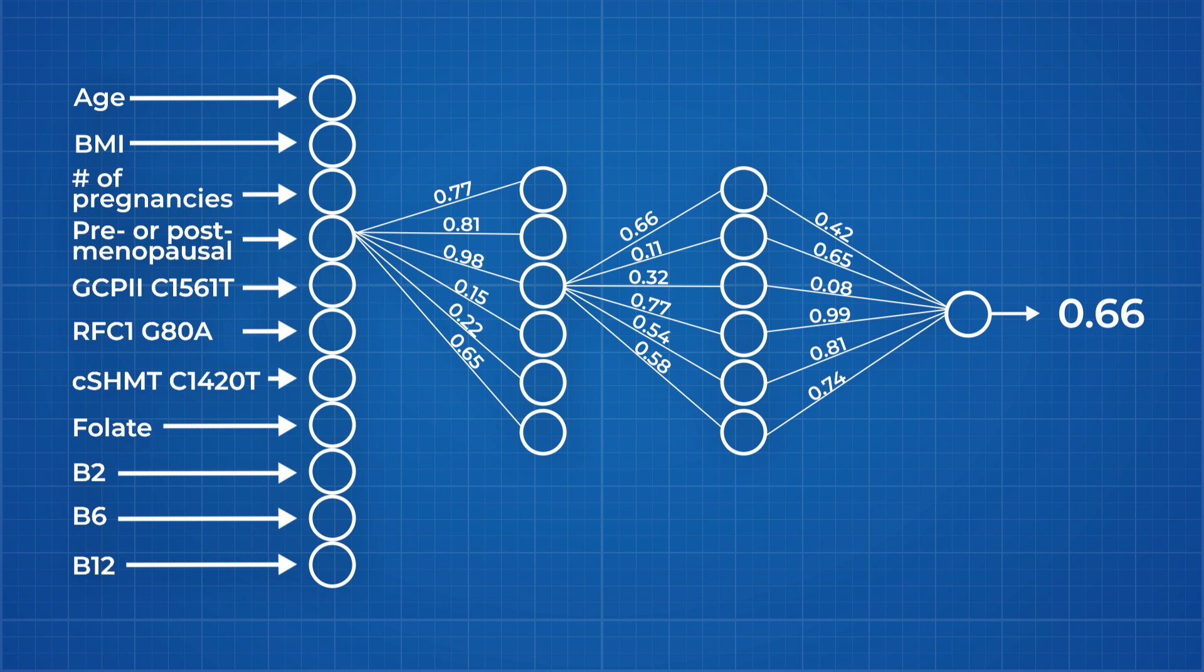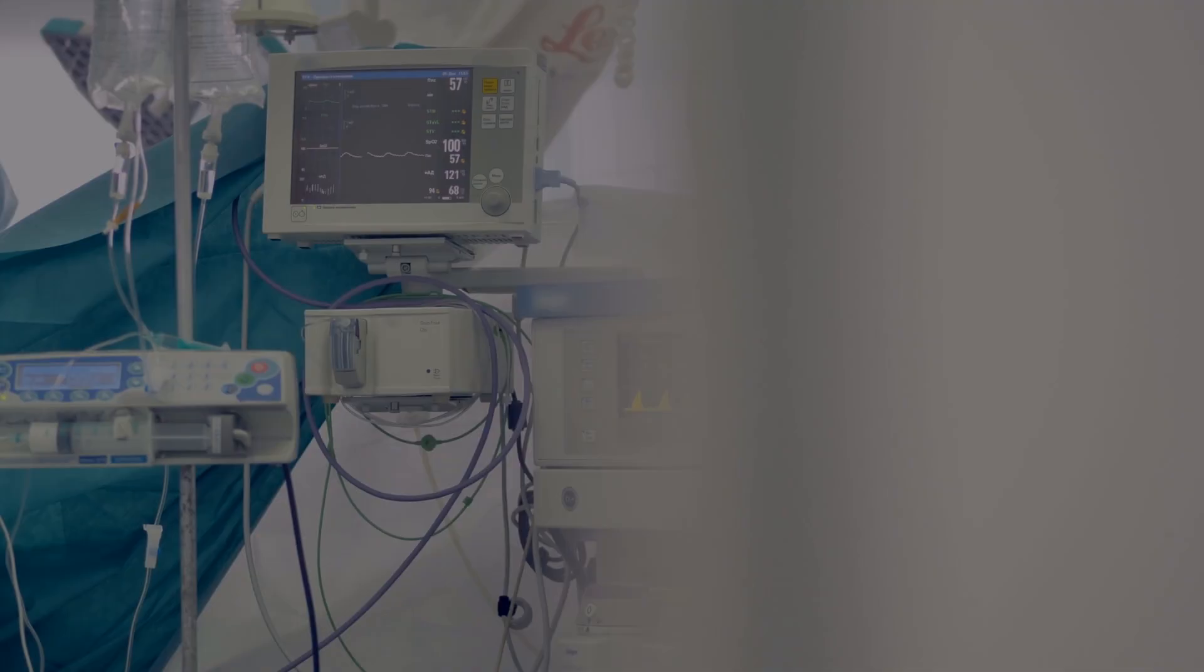At this point, training is complete and you can now test the network with the 25% of the data you reserved for testing. Using our example, the neural network should at this point be able to take the input data for someone who developed breast cancer and predict correctly that they did based on their input data.